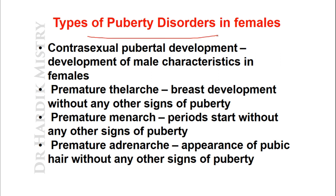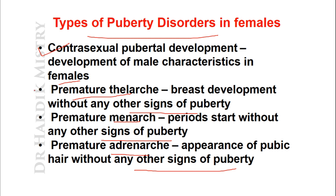Types of puberty disorders in females: Contrasexual pubertal development — development of male characteristics in females. Premature thelarche — breast development without any other signs of puberty. Premature menarche — menstrual cycles starting without any other signs of puberty. Premature adrenarche — appearance of pubic hair without any other signs of puberty, also known as pubarche. These are the different types of puberty disorders in females.